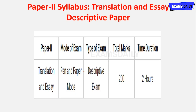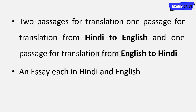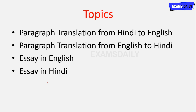Paper 2 covers Translation and Essay. It is a descriptive paper written using pen and paper, and the total marks are 200 with a time duration of 2 hours. Two passages are given: one passage for translation from Hindi to English, another for English to Hindi translation, plus an essay each in Hindi and English. Topics include paragraph translation from Hindi to English, paragraph translation from English to Hindi, essay in English, and essay in Hindi.